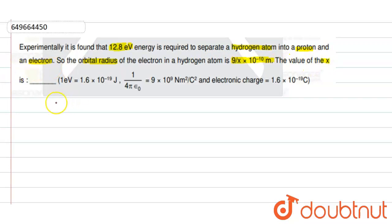So, here we can see. The formula is k e square divided by 2r is equal to 12.8 electron volt. So, we can say that k e square divided by 2r will be equal to 12.8 electron volt.